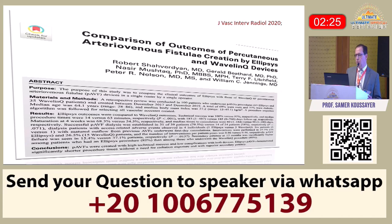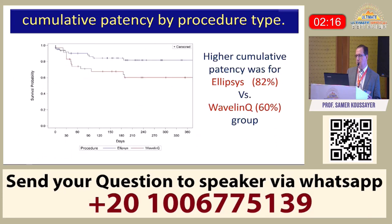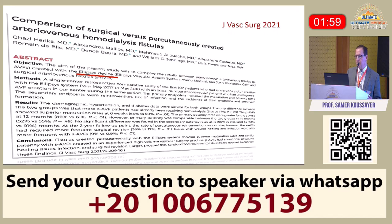A comparative paper evaluated both Wavelink and Ellipsis. When looking at primary patency, there was no difference between the two systems. However, when looking at accumulated patency by procedure, Ellipsis had better accumulated patency — 82% versus 60% for Wavelink. The conclusion was that both devices have high technical success, but accumulated patency was better for the Ellipsis system.